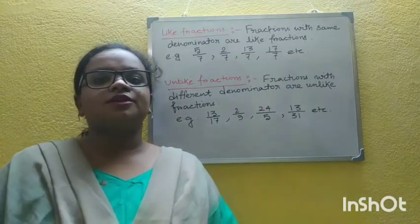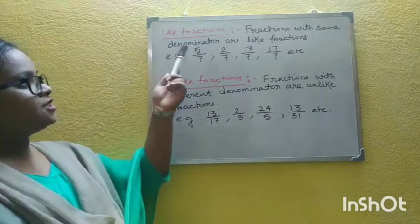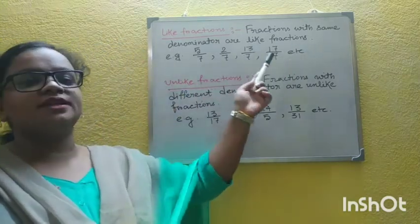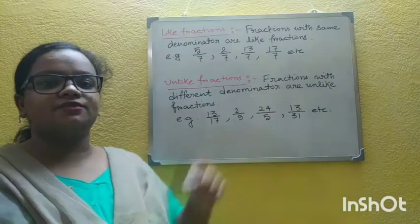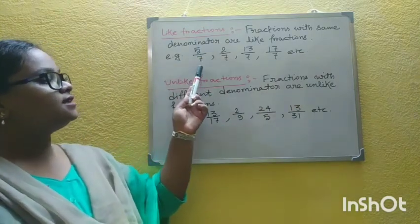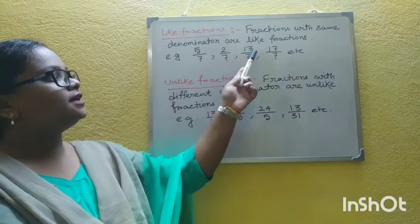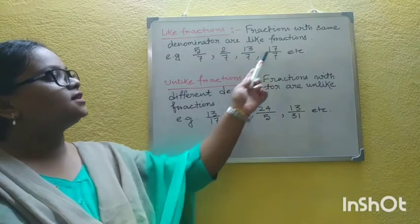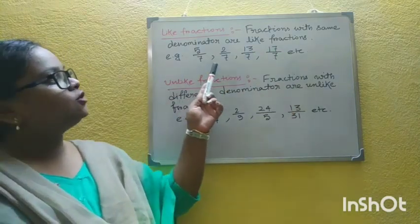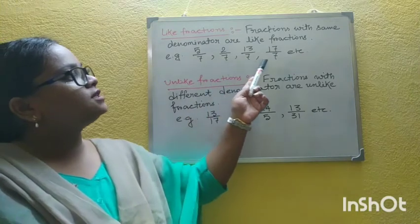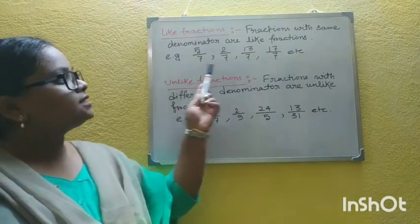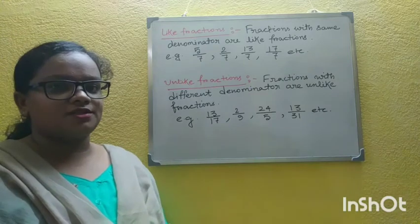First, we will learn about like fractions. Fractions with the same denominator are like fractions. For example: 5/7, 2/7, 13/7, 17/7, etc. Look here — all the denominators of these fractions are the same. So these fractions are like fractions.